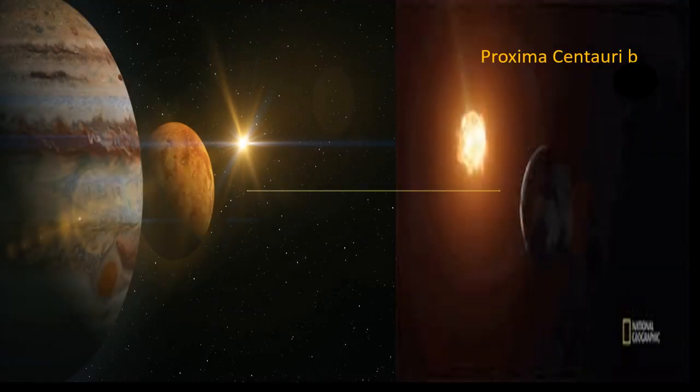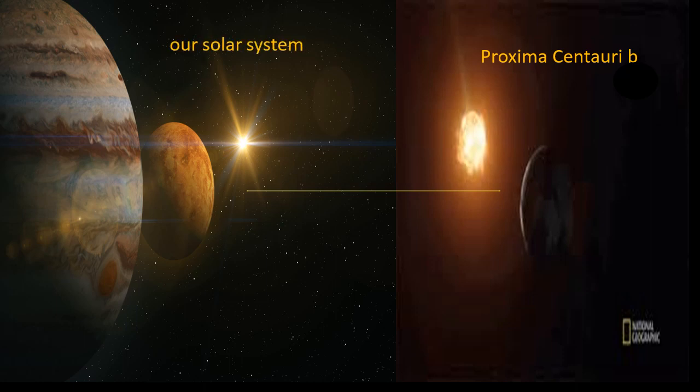The farther away a solar system is from ours, the less accurately we can measure things in that system. Imagine we are living on Proxima Centauri b, for example, and wanted to measure the total momentum of all the planets of our real solar system, I mean the one we actually live in.